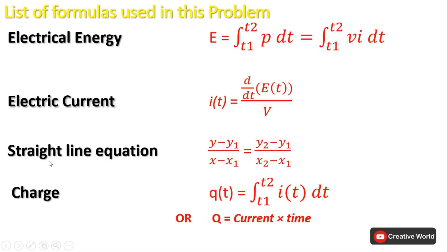The third formula we will use is the straight line equation, because in our scenario straight lines are plotted and we need their equations to find the current. The last formula is the charge formula: Q equals current multiplied by time.